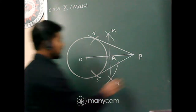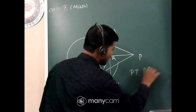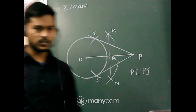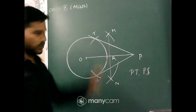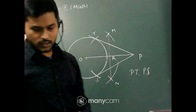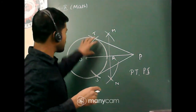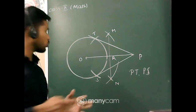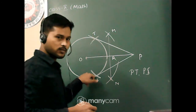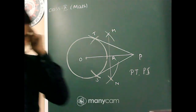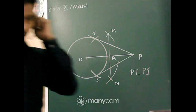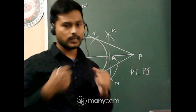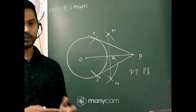So PT and PS are the tangents from point P to the circle. If the question asks for one tangent, cut once; for two tangents, cut two times. Tell me, have you understood? If anyone has a problem, you can tell me; otherwise we'll go to the exercise and solve it.